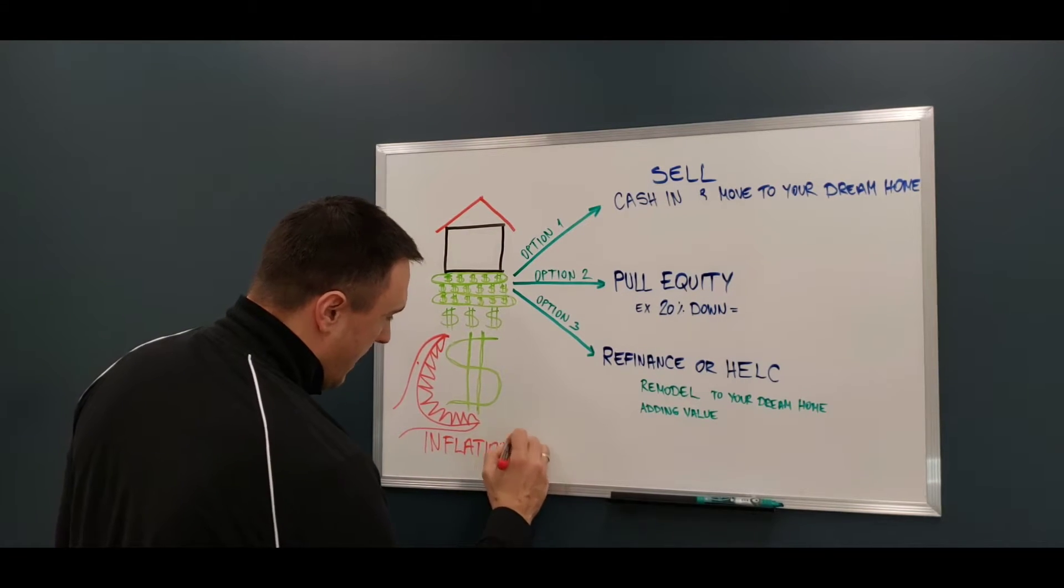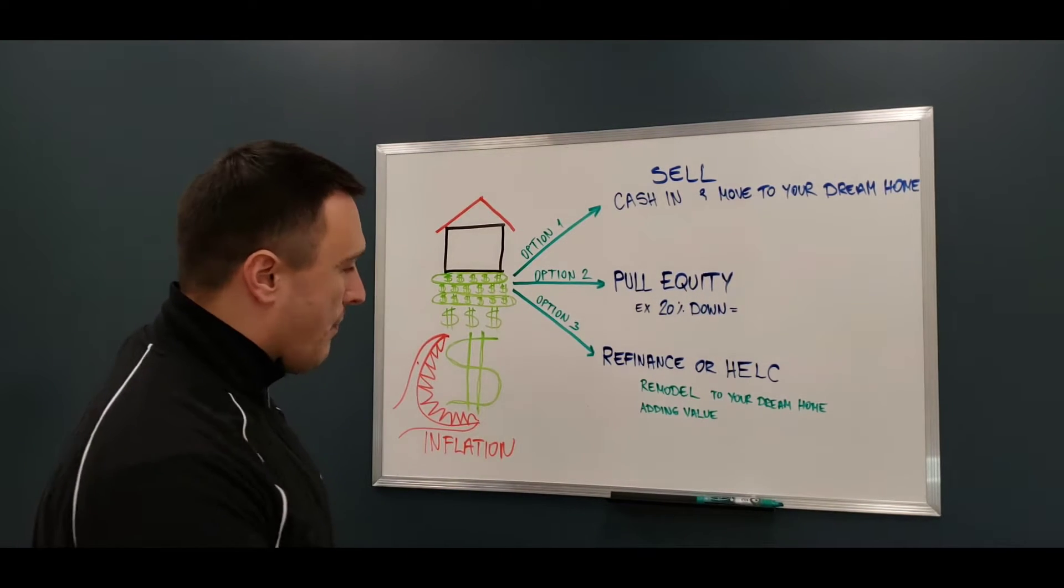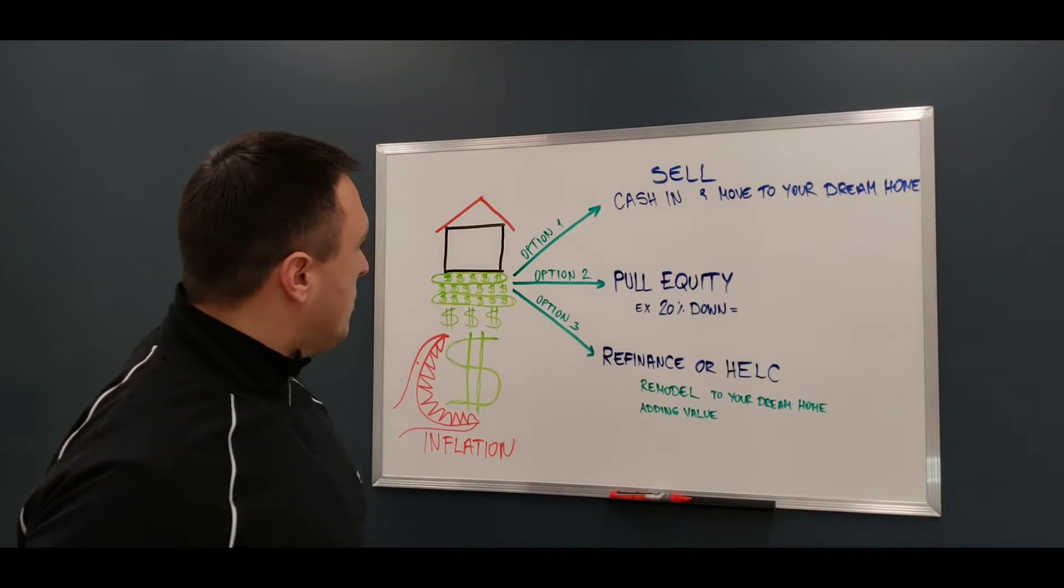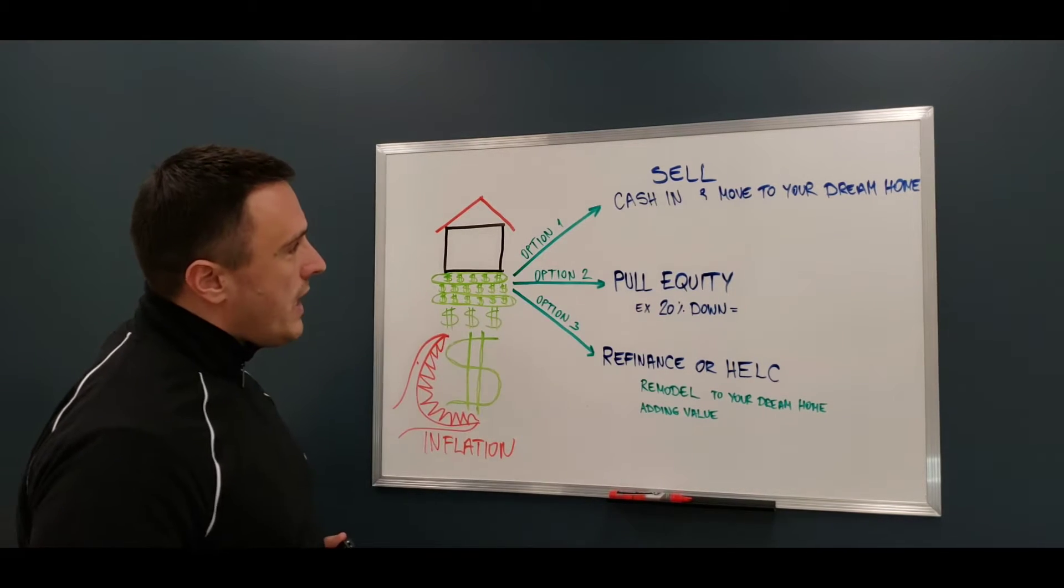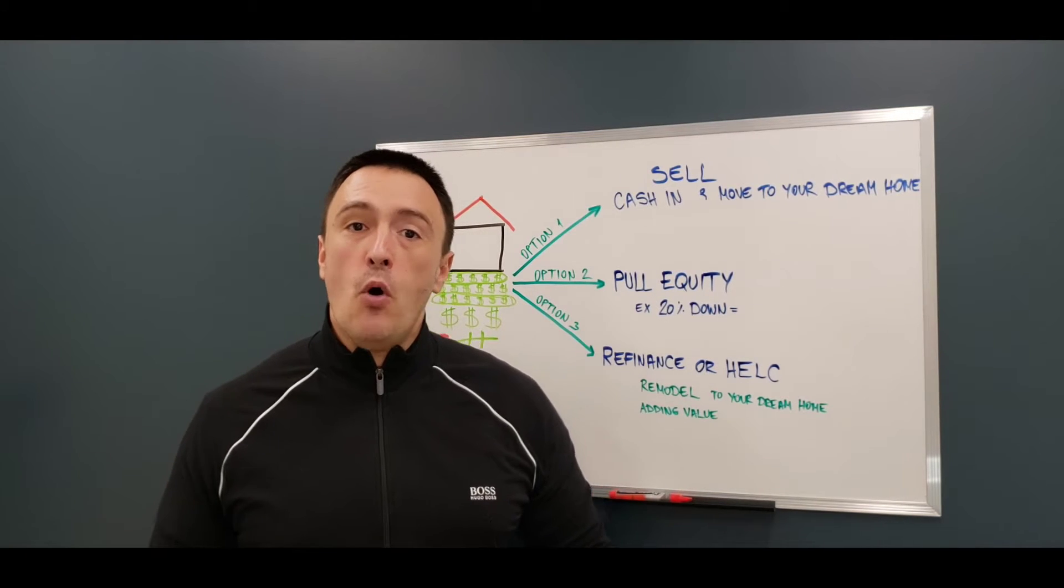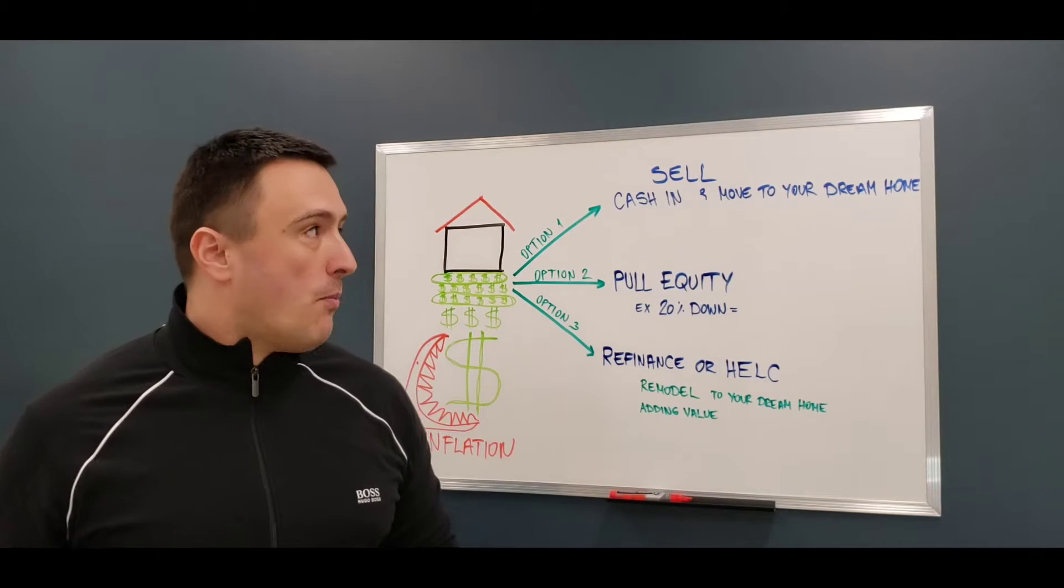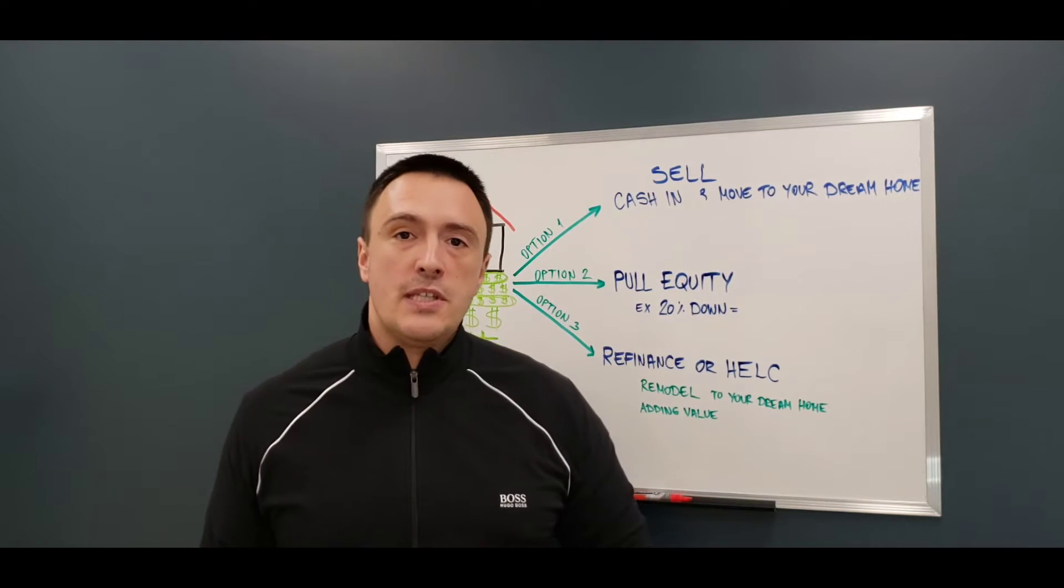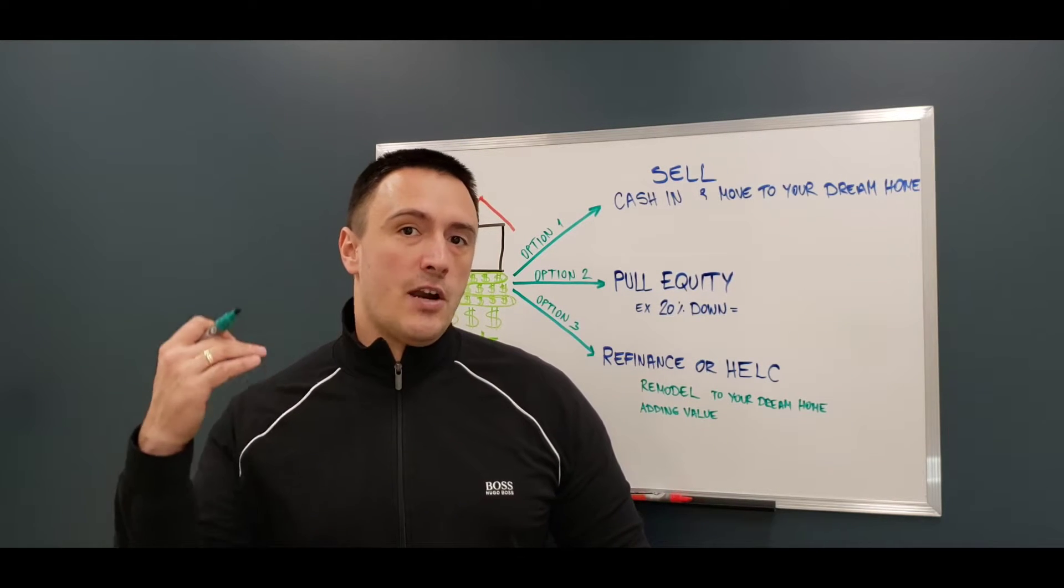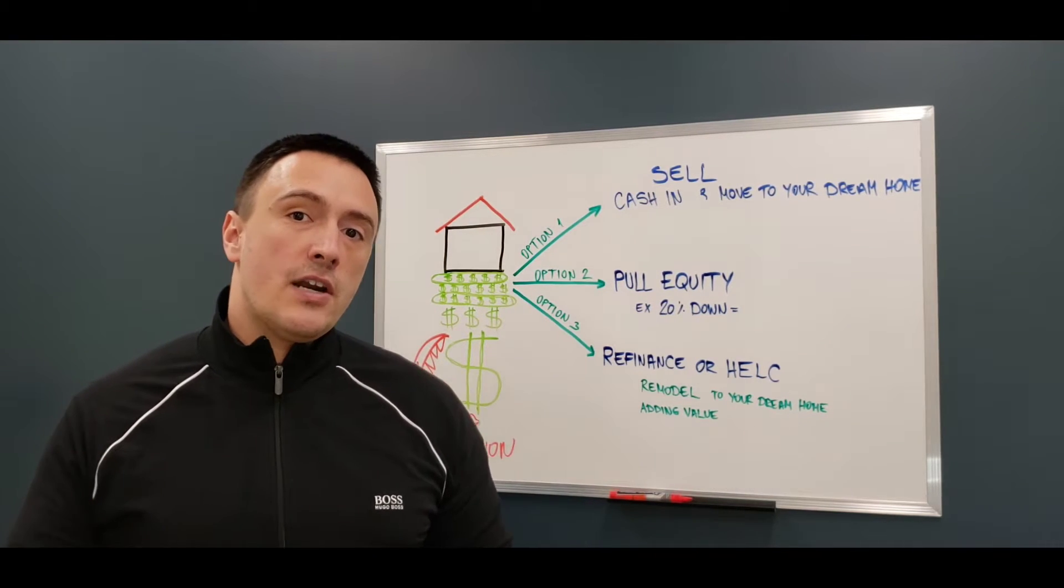So these are the options that are available to you right now. Option number one is to sell your property, cash in on it, and move to your dream home with all the flexibility that a lot of us have now from working from home. What I've seen happening a lot in this market is people are selling their homes in Toronto and moving to other areas like Kitchener-Waterloo, and basically for the same amount of money they can now purchase their dream home.